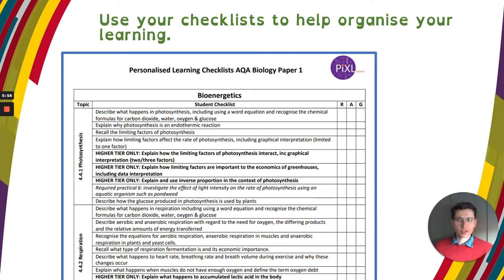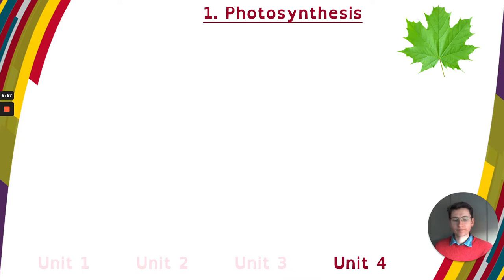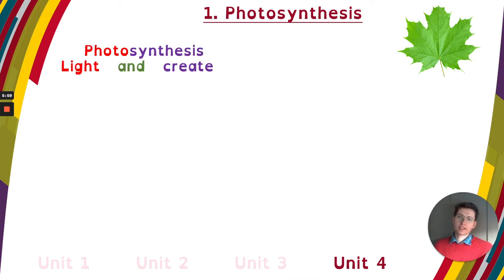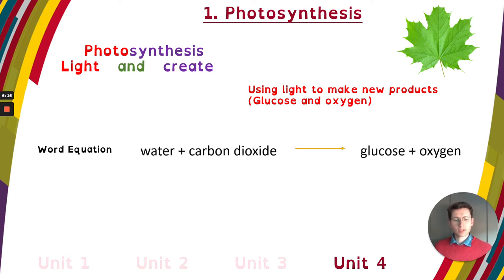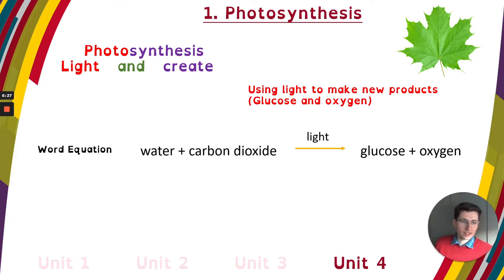Let's start with photosynthesis. Photo means light, and synthesis means to create something, so photosynthesis is using light to make new products — glucose and oxygen. For our word equation, which foundation needs to know: water plus carbon dioxide, using light, converts into glucose and oxygen. Glucose is our useful product, and oxygen is a non-useful waste product, so it's just left to go.